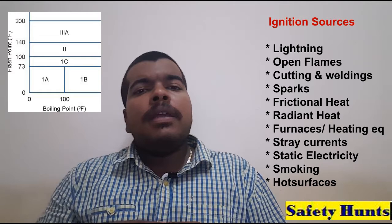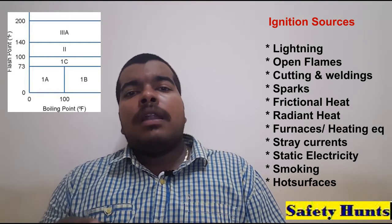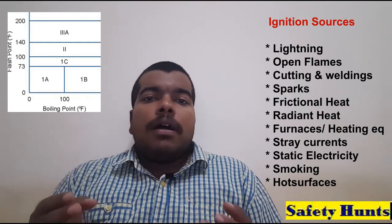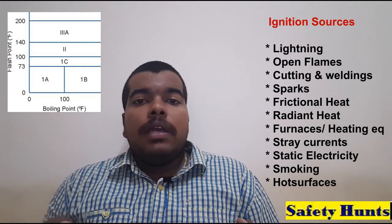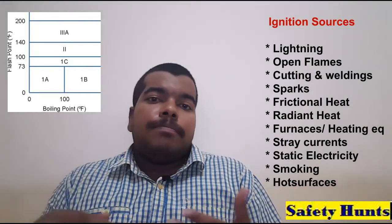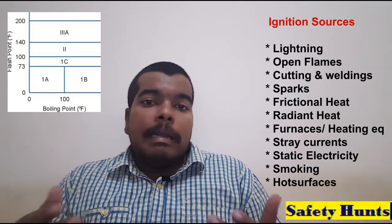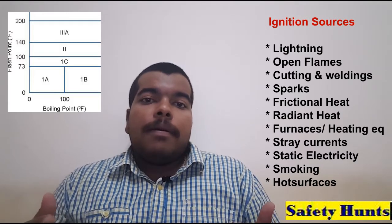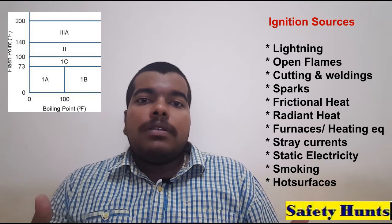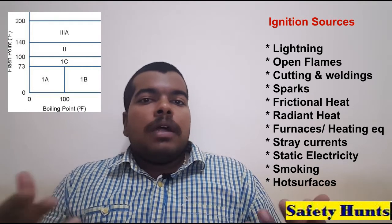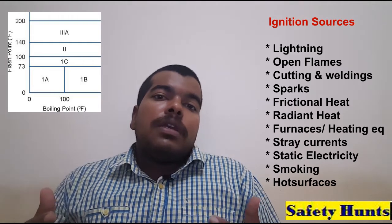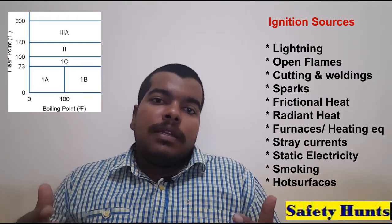Normally there are many ignition sources, which include lightning and open flames, naked flames, cutting and welding, sparks and frictional heat, radiant heat, furnaces, other heating equipment, and stray currents. These are all the common ignition sources in oil and gas industries.